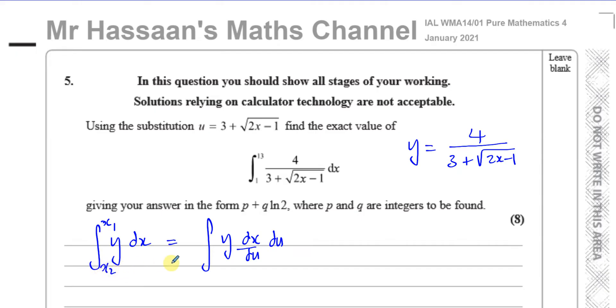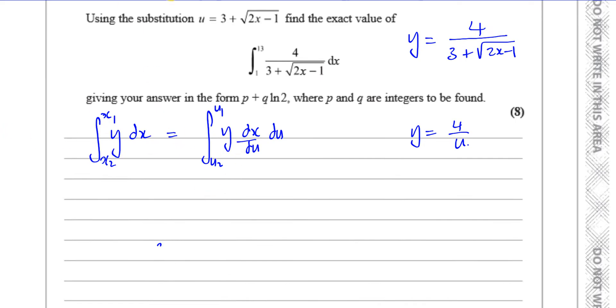This is in terms of the x values, x1 and x2. What I have to do is I have to take this expression and because it says du, I have to express everything in terms of u, including the limits. Even the y has to be expressed in terms of u, which is not too difficult to do because we say u is equal to 3 plus the square root of 2x minus 1. We can replace the 3 plus root of 2x minus 1 with the u. So y is going to be 4 over u.